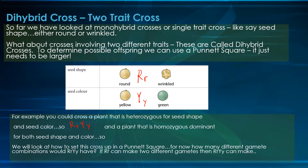And a plant that is homozygous dominant for both seed shape and color. So what's that genotype going to be? Homozygous dominant for seed shape: big R, big R. And homozygous dominant for seed color: big Y, big Y.